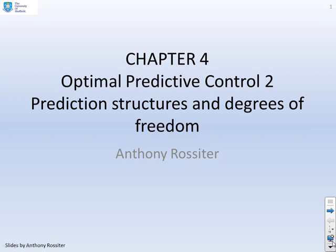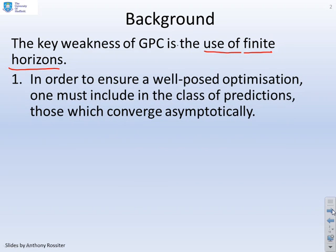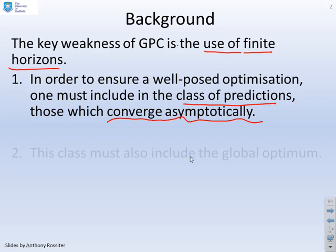This video looks at prediction structures for optimal predictive control. The previous video emphasized that the key weaknesses of GPC are based on the use of finite horizons. In order to assume a well-posed optimization, you need to include a class of predictions which converge asymptotically, that is not in finite time.